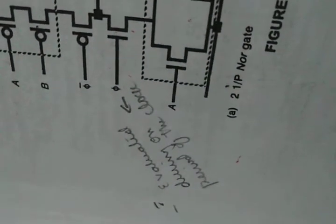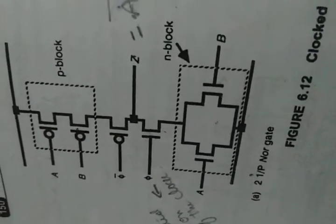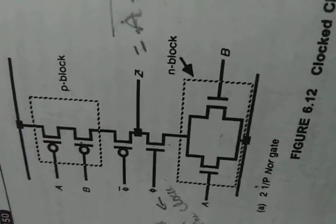When phi is 1, both transistors are on, and the logic of the input will be evaluated. These will be evaluated during the period whenever the clock is high.